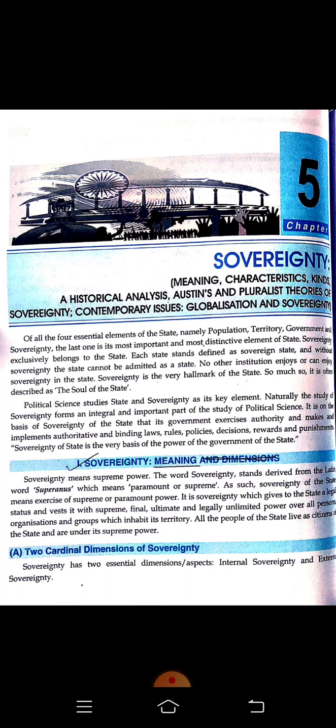Of all the four essential elements of a state — population, territory, government, and sovereignty — these are the four elements needed for a country or state. Sovereignty is the most important and is one of the most distinctive elements of the state. Sovereignty exclusively belongs to the state only. No other institution enjoys or can enjoy sovereignty. Sovereignty is often described as the soul of the state.